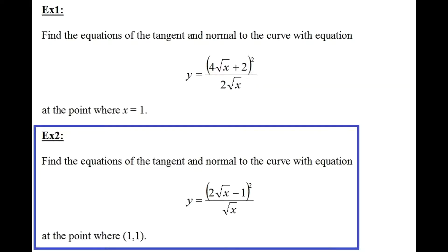So let's have a go at this example. Here is our curve equation: y is equal to (2√x - 1)² over √x. We have both the x and y coordinates, and they are both 1. Unlike the previous example where only the x coordinate is given, in this example both x and y are given.